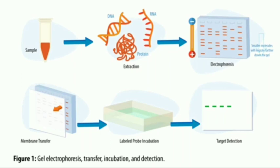Now, there are three different blottings and they have an overall diagram. If we give a mixture of DNA, RNA, and proteins — if we are doing Southern blotting, there will only be DNA bands. If we are doing Western blotting, there will only be proteins. If we are doing Northern blotting, there will only be RNA.